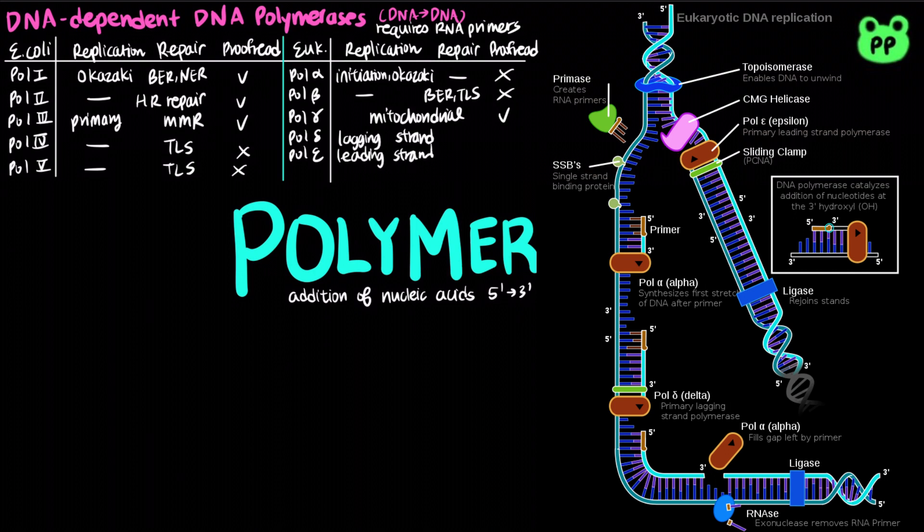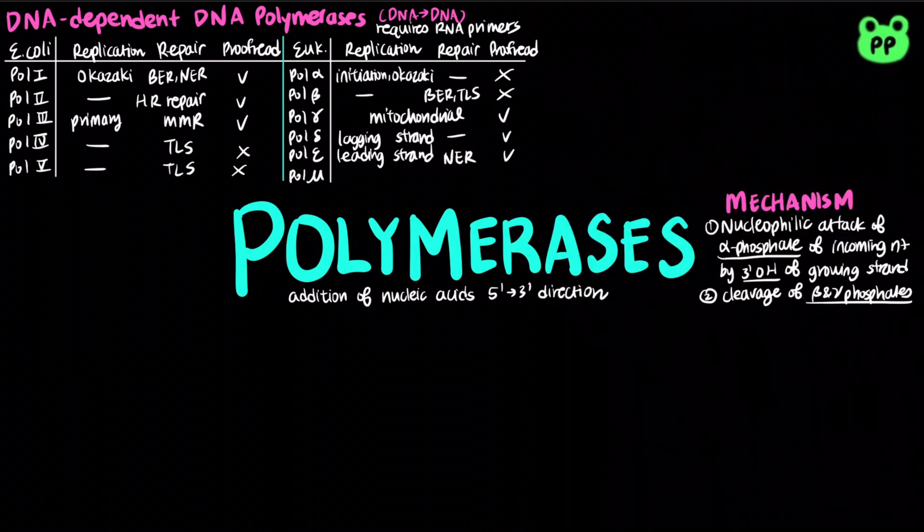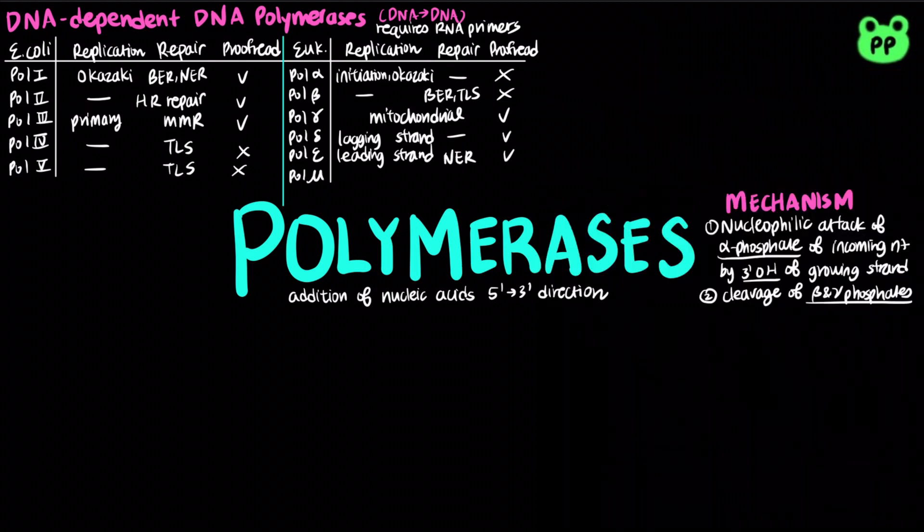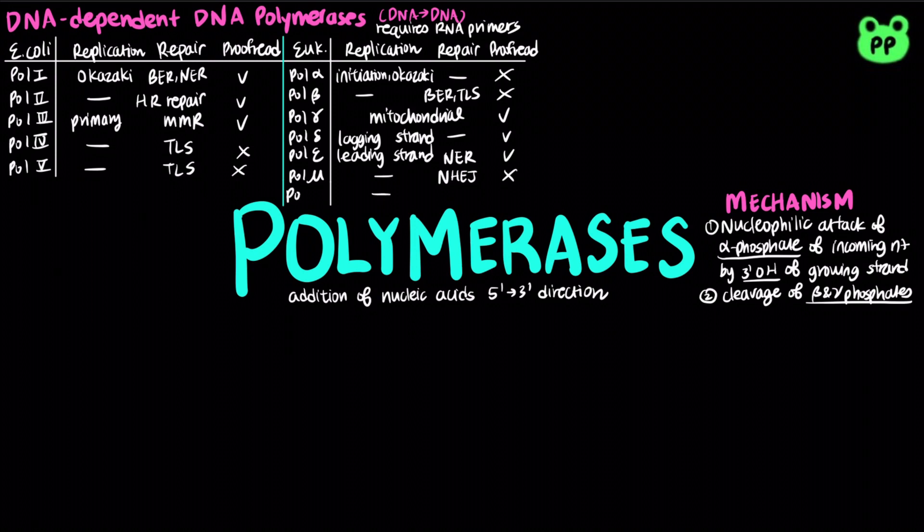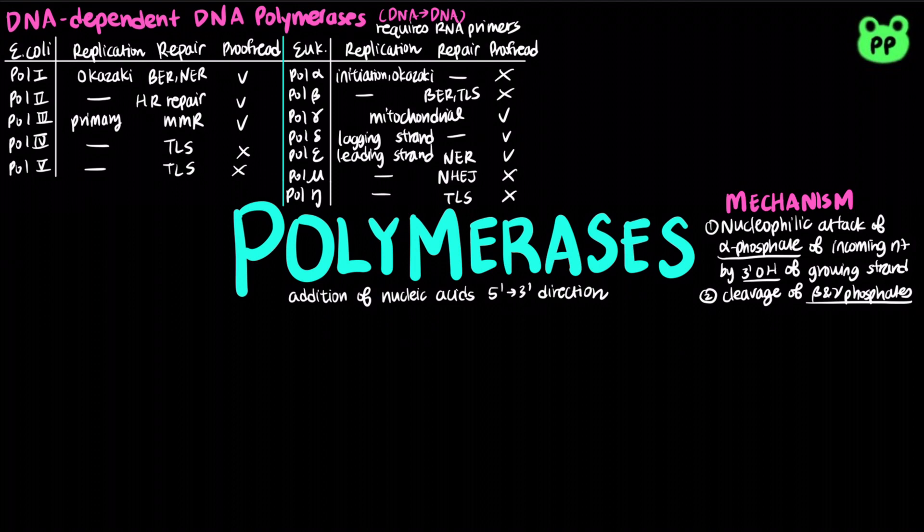Both polymerases have 3 prime to 5 prime exonuclease proofreading activities. DNA polymerase mu is involved in error-prone repair mechanism for double-strand breaks, known as non-homologous end-joining. And DNA polymerase eta is involved in translesion DNA synthesis. Both polymerase mu and eta lack proofreading activities.